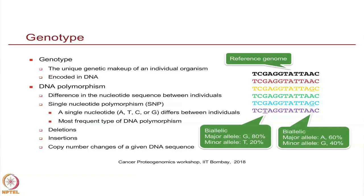I will start with the simple definition of genotype. We know that genotype refers to the unique genetic makeup of individual organisms and it is encoded in the DNA sequence. The difference in the DNA sequence between individuals is called DNA polymorphism.